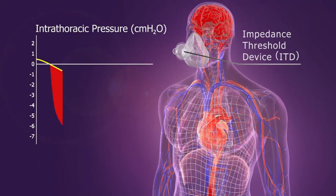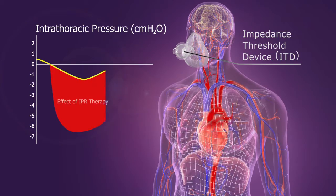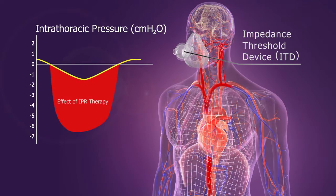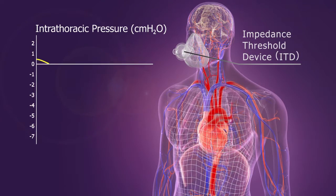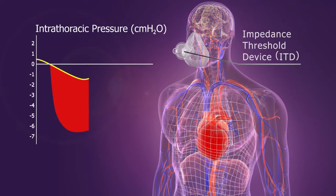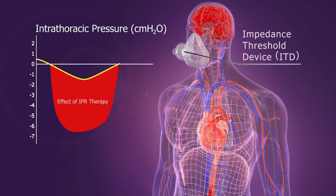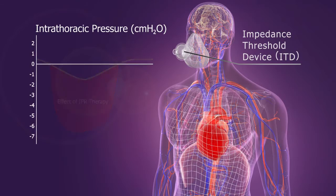IPR therapy is used to enhance negative intrathoracic pressure to help the body help itself in states of shock. Studies show that IPR therapy enhances the negative pressure in the chest by providing a slight amount of therapeutic resistance to the influx of air.